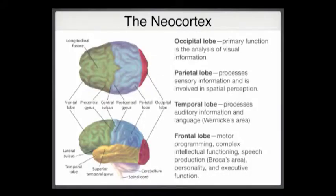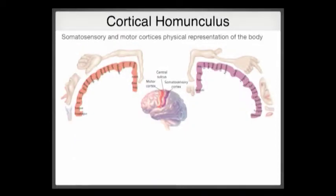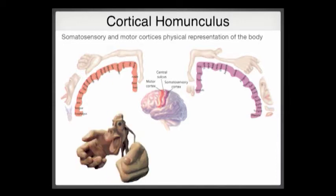Now let's talk about sensory cortices — these strips — and how they're organized to represent different parts of your body. There are what we call cortical homunculi, or the cortical homunculus. Homunculus means 'little man.' This little man looks very strange because he is drawn to scale, reflecting the over-representation of certain body parts like the fingers, hands, lips, and eyes.